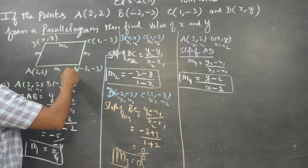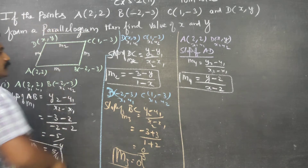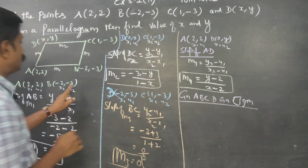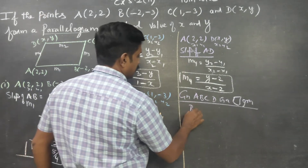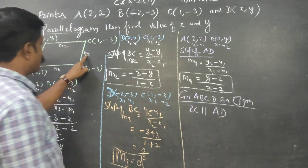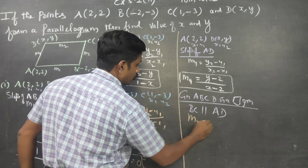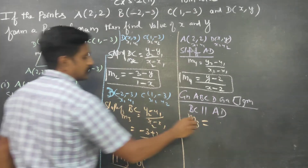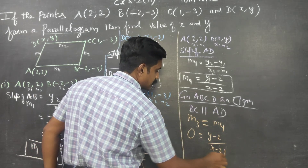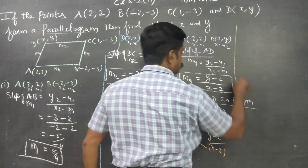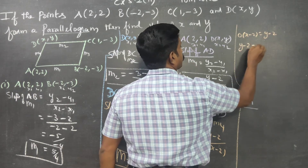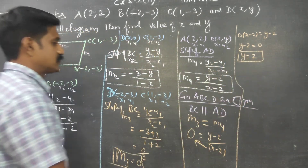Since ABCD is a parallelogram, BC is parallel to AD. Therefore M3 = M4. If two sides are parallel, their slopes are equal. So 0 = (y - 2) / (x - 2). Cross multiply: 0 × (x - 2) = y - 2. Therefore y - 2 = 0, and y = 2. This is my first answer.